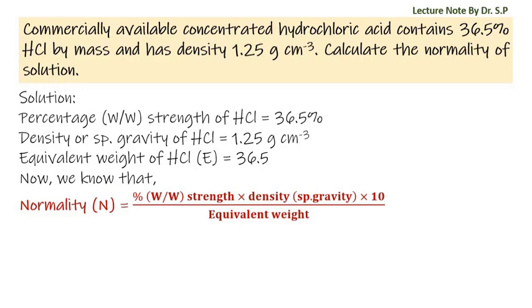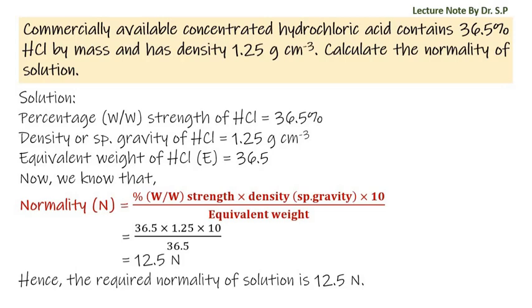The required normality of solution equals 36.5 × 1.25 × 10 / 36.5. On computing this we get 12.5 N. Hence, the required normality of solution is 12.5 N.